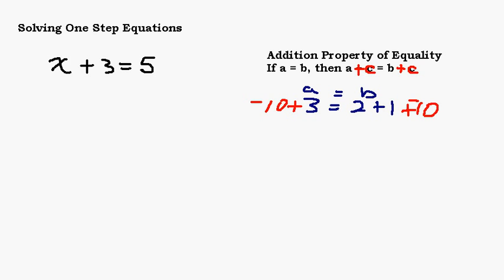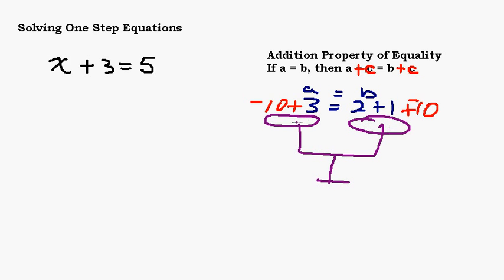It's good to think of an equation as a balance scale. We've got a on the left side and b on the right side, and the equal sign tells us it's balanced — a has to equal b. So if I add something to one side, I have to add it to the other side to keep it balanced. Even adding a negative, which is the same as subtracting. That's what the Addition Property of Equality says.